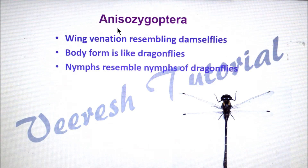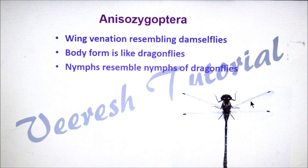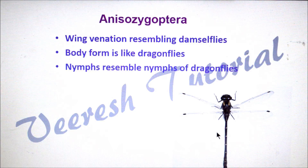The third one is Anisozygoptera. Here wing venation resembles damselflies but body form is like dragonflies, whereas nymphs resemble those of dragonflies.